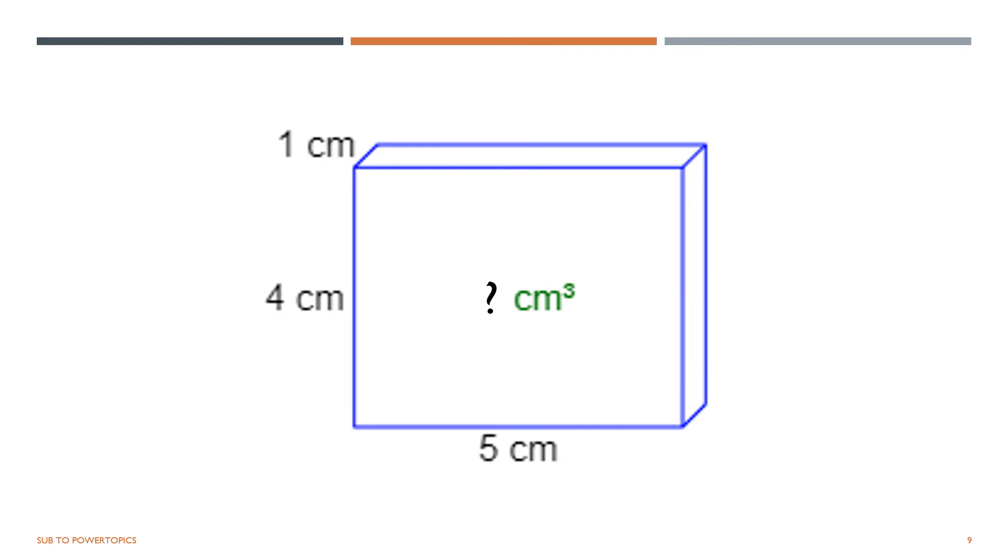Let's solve this question. The length here is 5 cm, the height is 4 cm, and the width is 1 cm. Now we know that we need to times the width, the length, and the height. So when we times it, we'll get 20 cm cube.